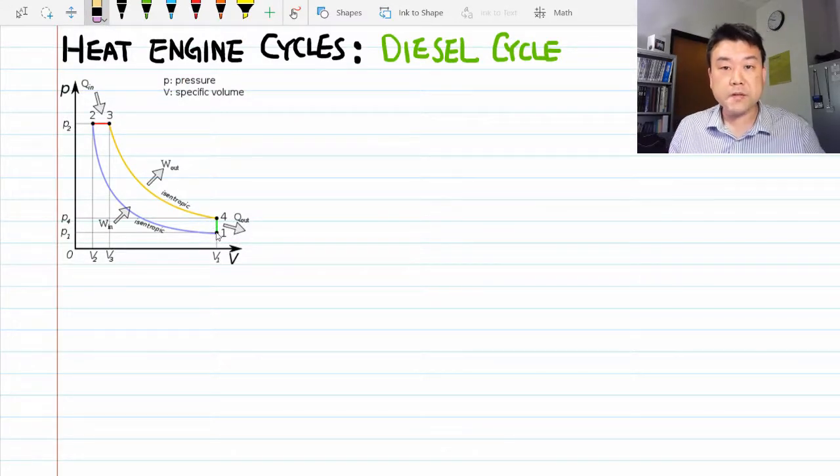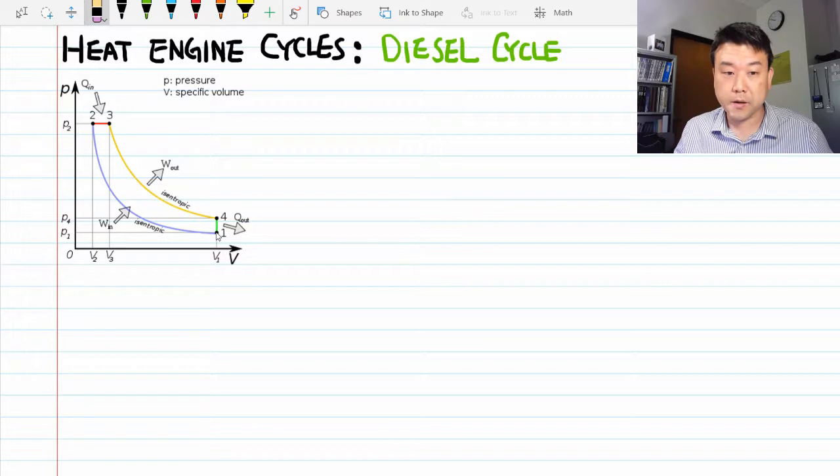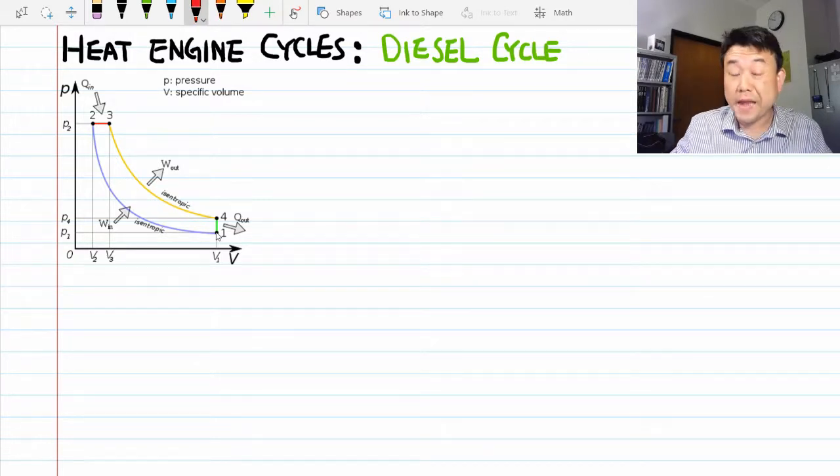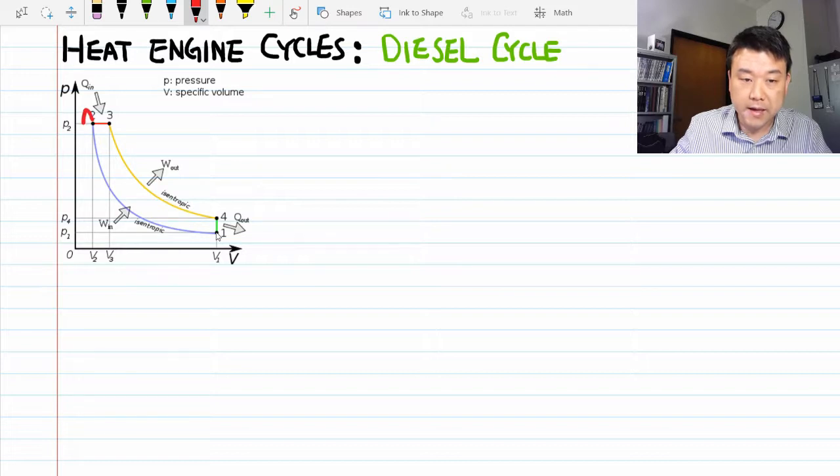So I copied over the PV diagram here from the Wikipedia page so that I don't have to redraw everything. But it looks like this diagram is a little bit overdefined. So let me label the parameters that we will actually use. So let me first relabel the points in the order I plan to go in. Let me label this A. We're gonna start here. B, C, and D.